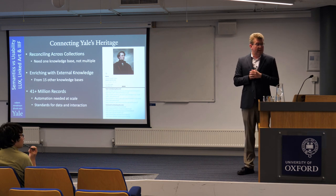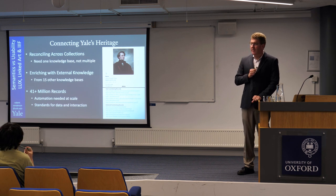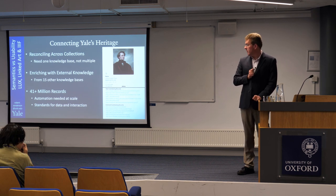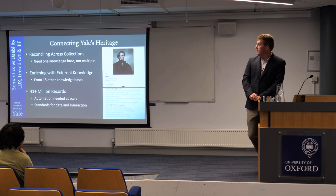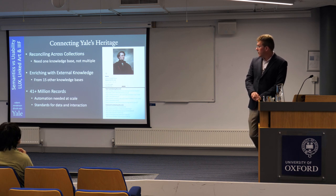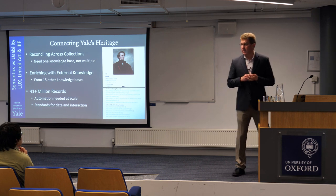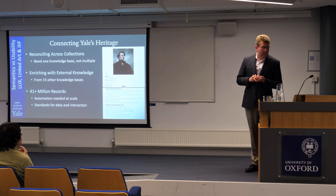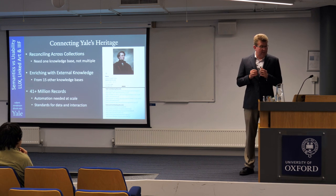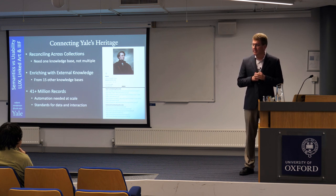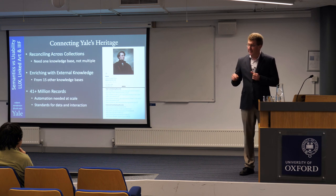In the museums, they use the Getty vocabularies — AAT, ULAN, and TGN — whereas in the library, they use the Library of Congress equivalents: Library of Congress Subject Headings and Name Authority Files. We could then connect from our records to those, and then through Wikidata and other external authorities to complete the circle and reconcile the records. Once reconciled, we could enrich our knowledge from those external datasets because all of the knowledge is linked and open. This happens in a completely automated way — with 41 million records, it would take years for students to click through manually.